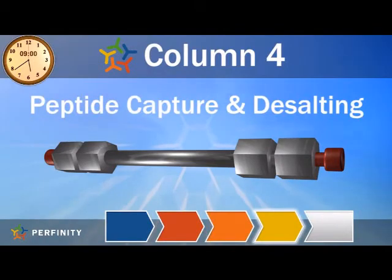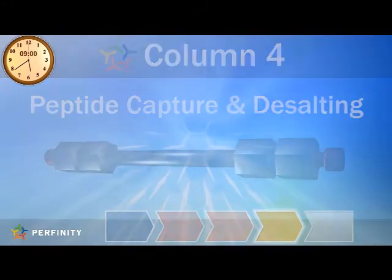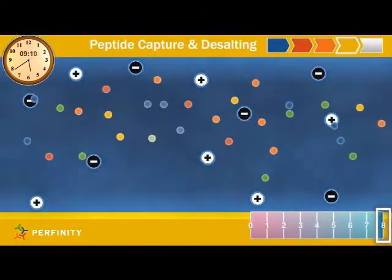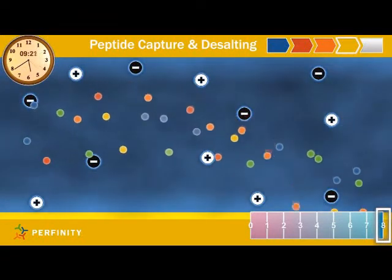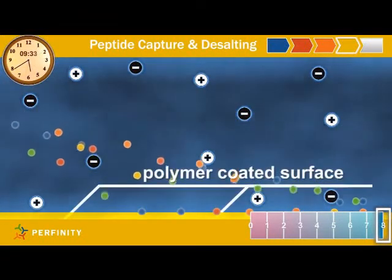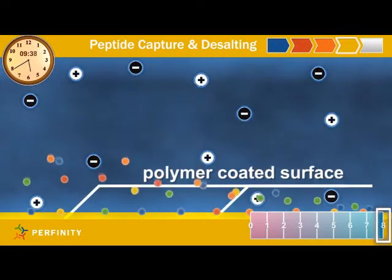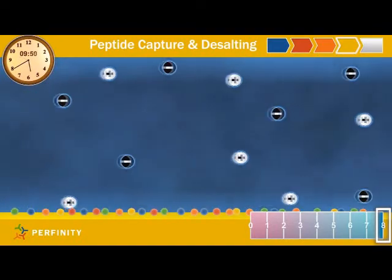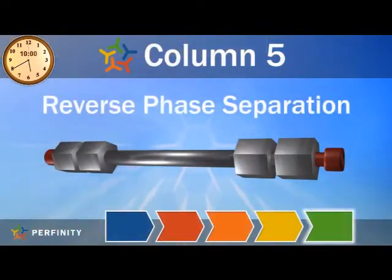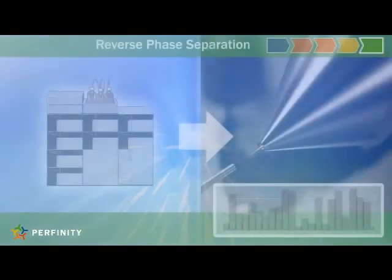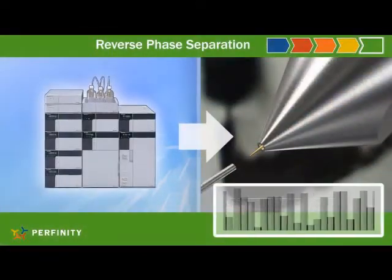Salts will need to be removed from the buffered solution prior to LC-MS analysis. Peptides will adhere to a polymer-coated surface in the desalting column, and salt ions are washed away to waste. In as little as 10 minutes, the process is complete and the peptides are ready for LC-MS analysis.